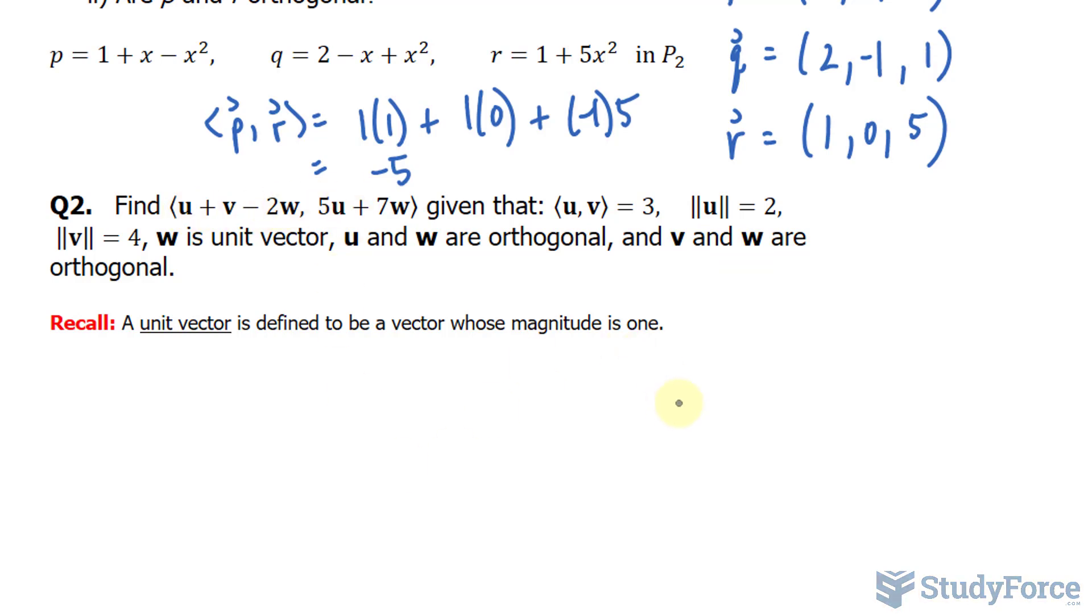u and w are orthogonal, and so is v and w. According to the properties of inner products, we have to treat this expression as if it's a polynomial being multiplied by a binomial. Think of it like this: u plus v minus 2w, that's a polynomial, multiplied to the binomial 5u plus 7w.